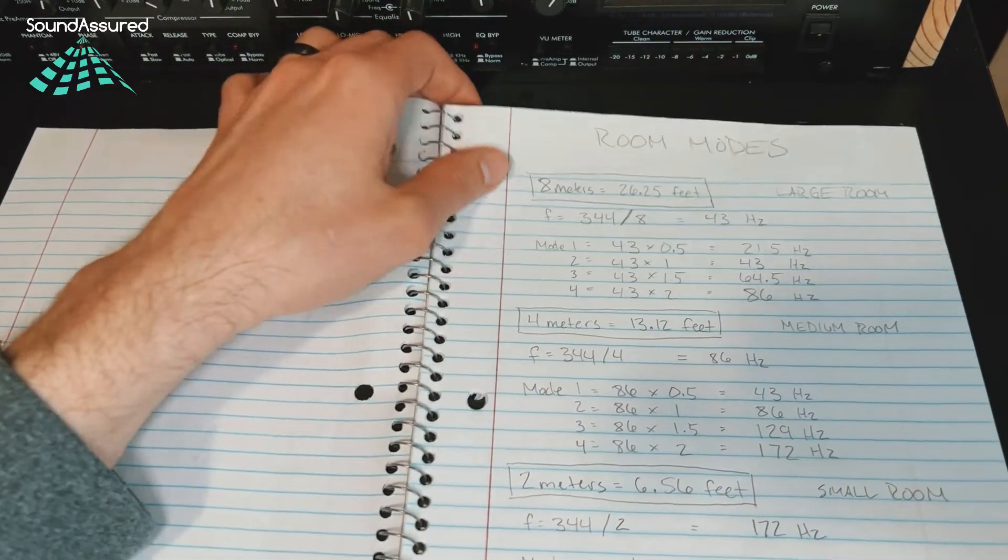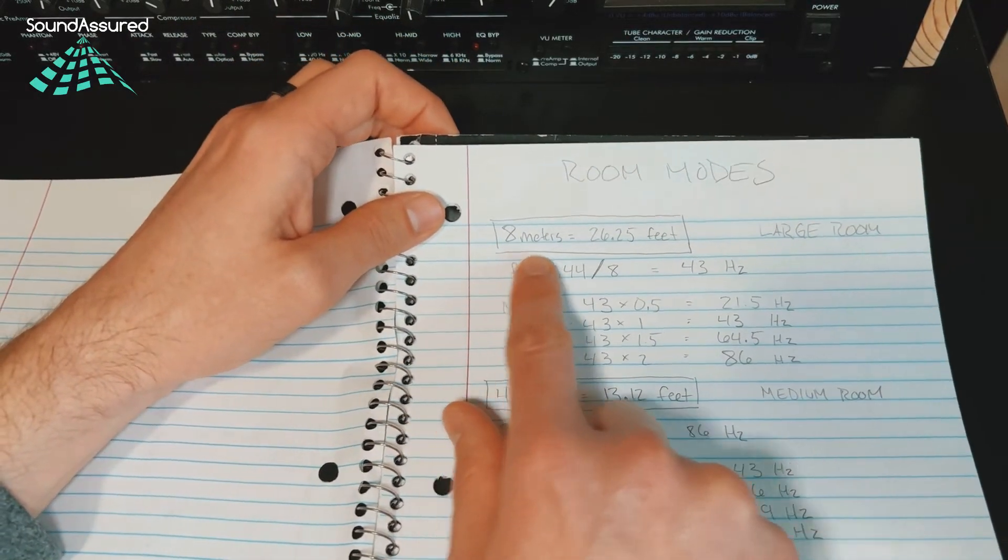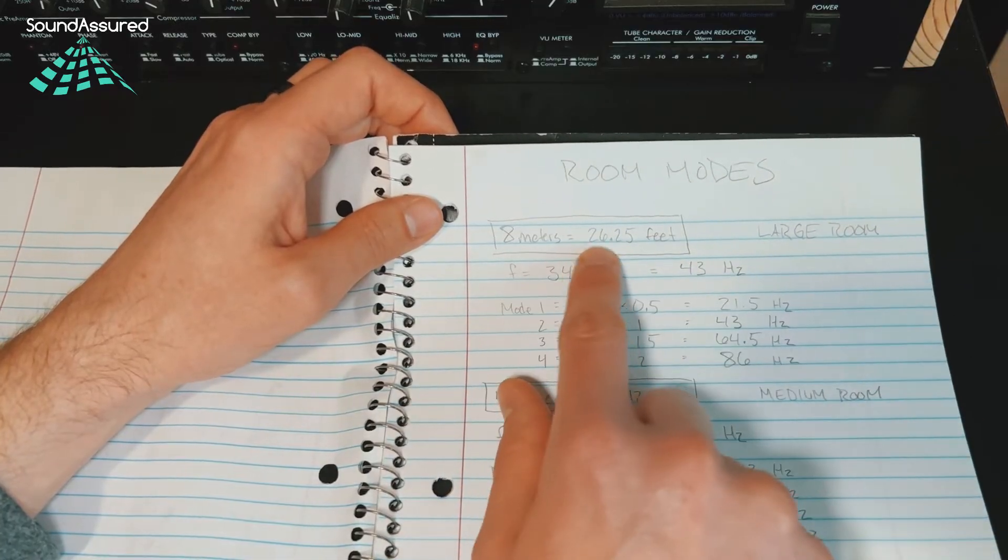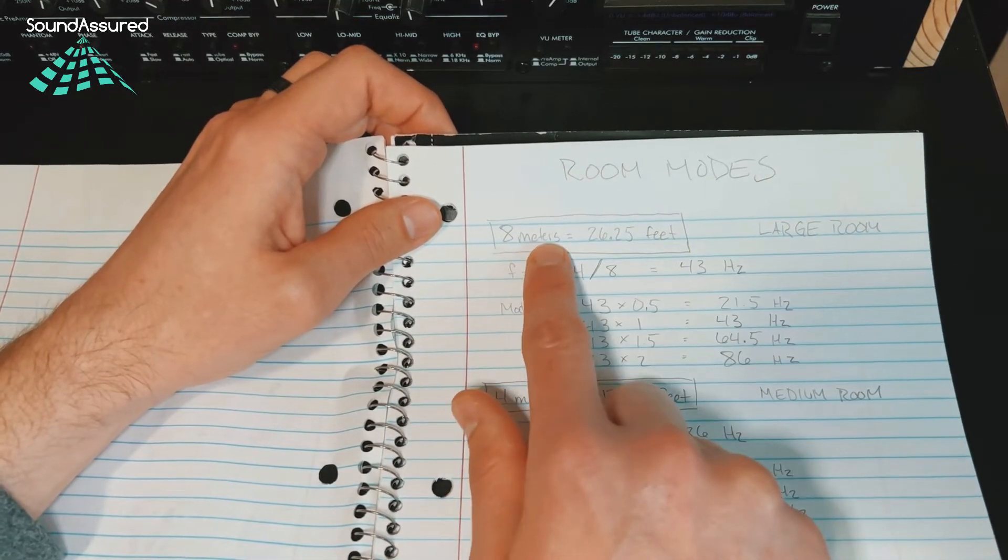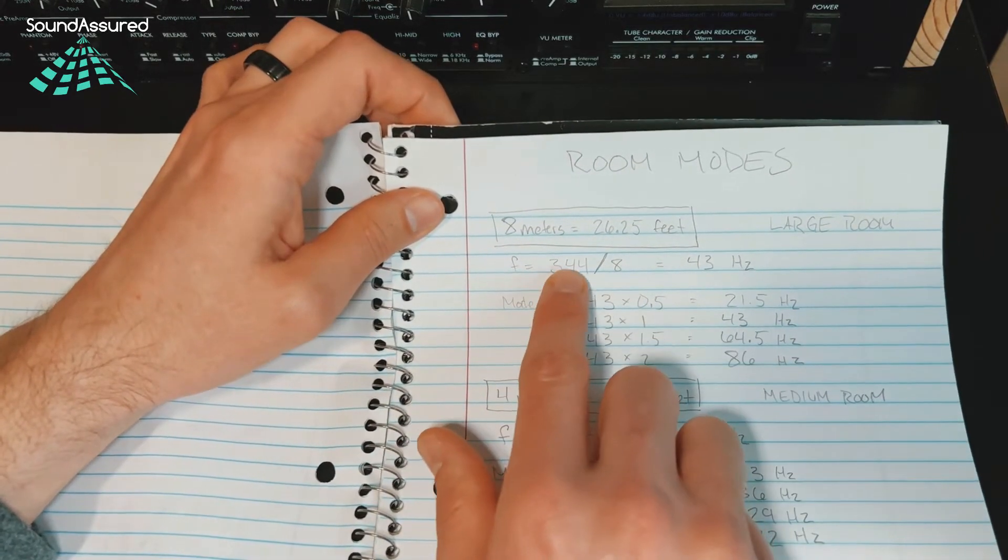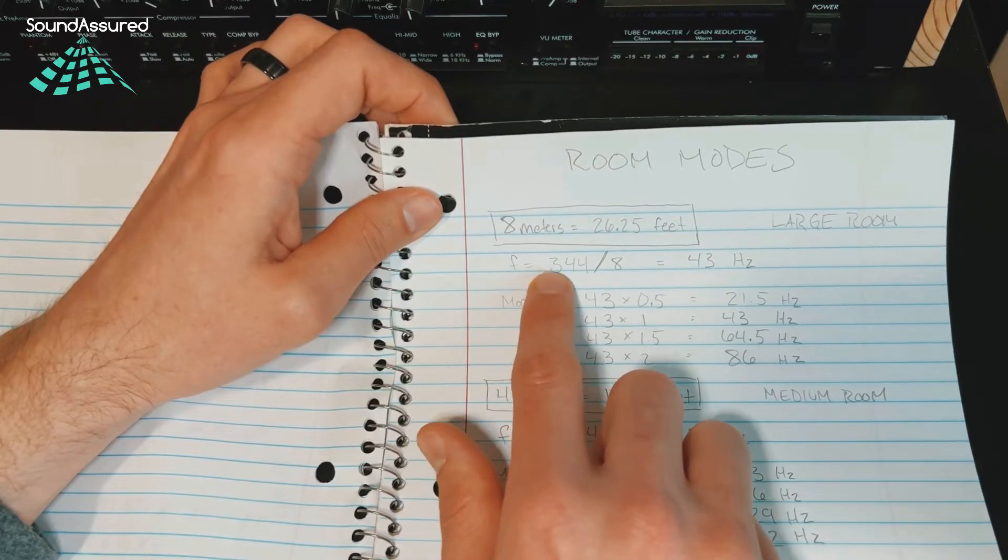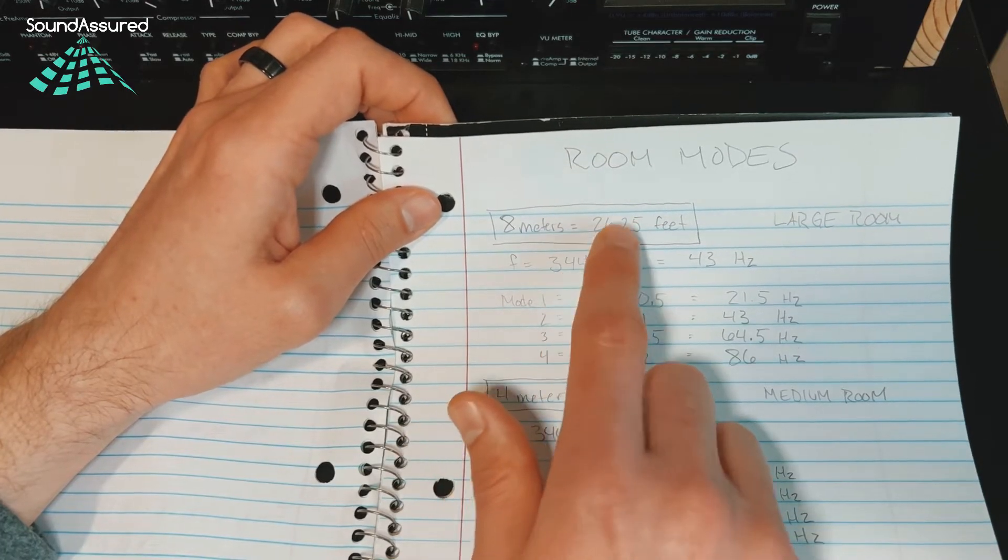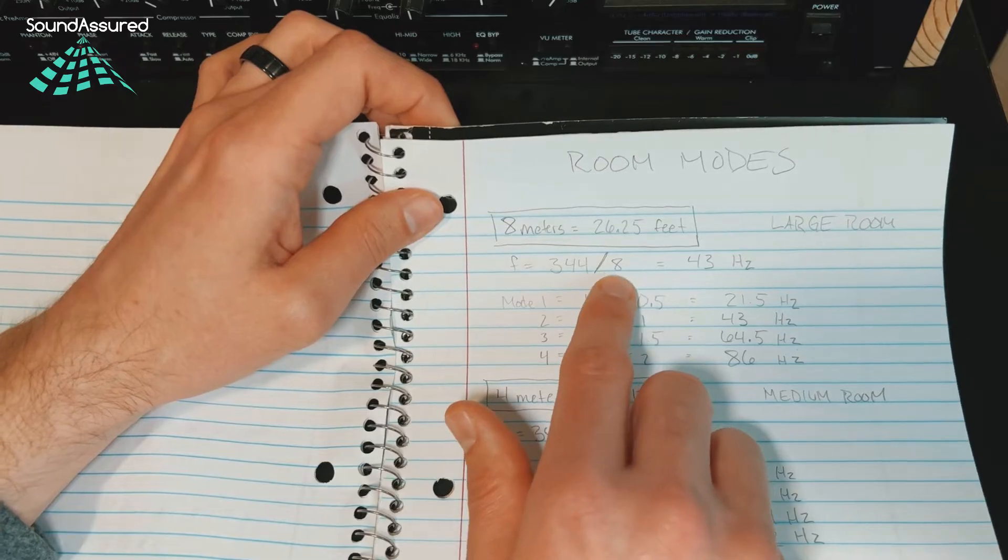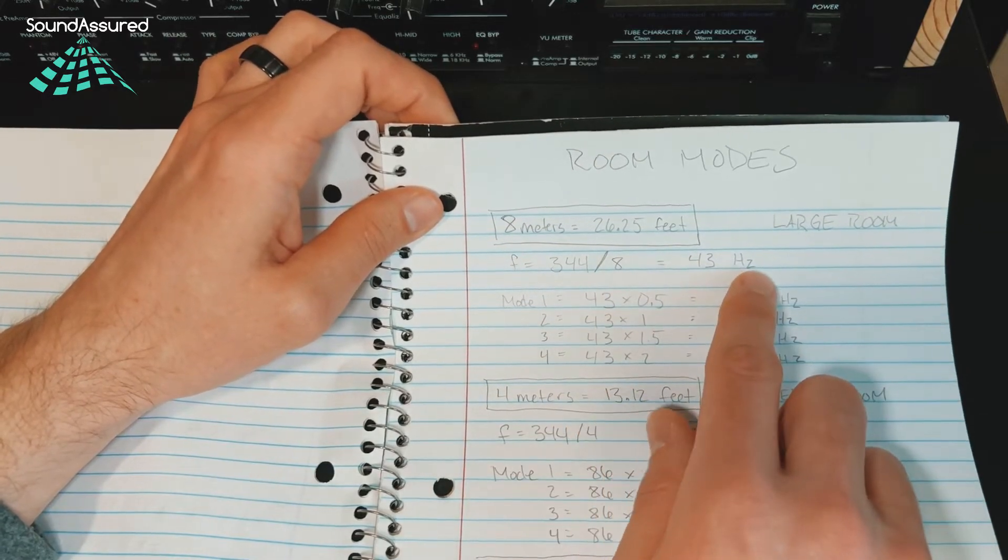Have some examples here for you. This first one is kind of a bigger room, 26.25 feet, eight meters. So we take the frequency equals the speed of sound divided by eight meters, which equals 43 Hertz.